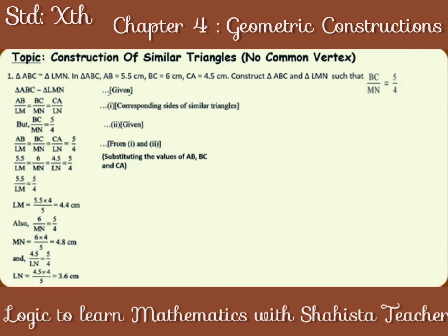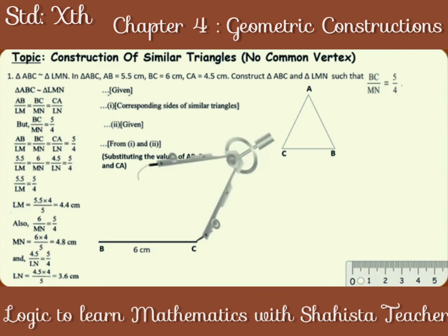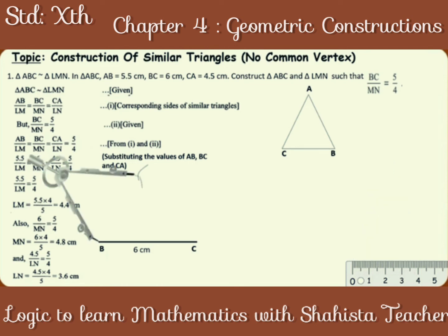Steps of construction. First, construction of triangle ABC. Draw a rough figure of triangle ABC. Draw a line segment BC of length 6 cm. On the compass, take measurement 5.5 cm and construct an arc. Similarly, take a measurement of 4.5 cm and construct an arc. Name the intersection point as A.